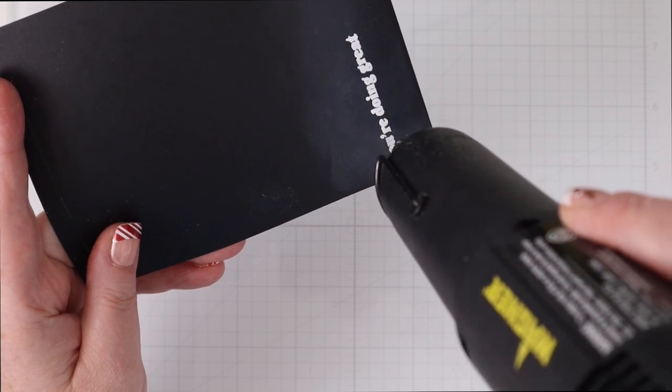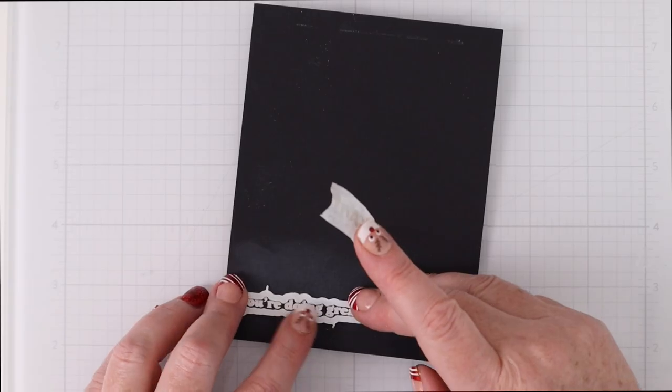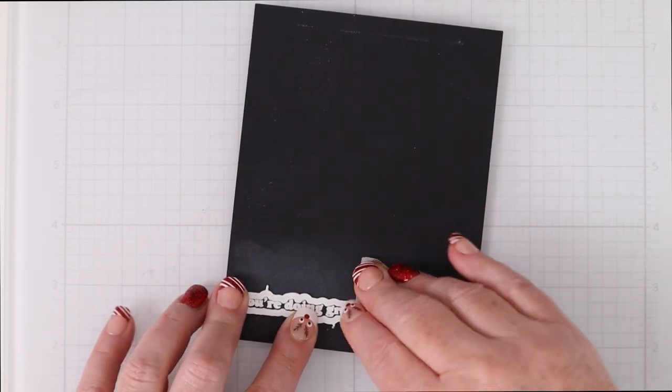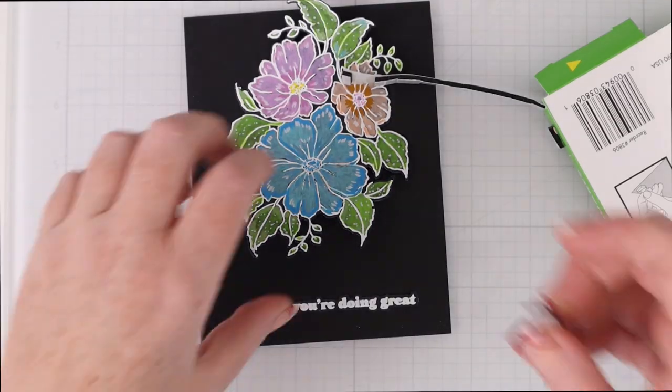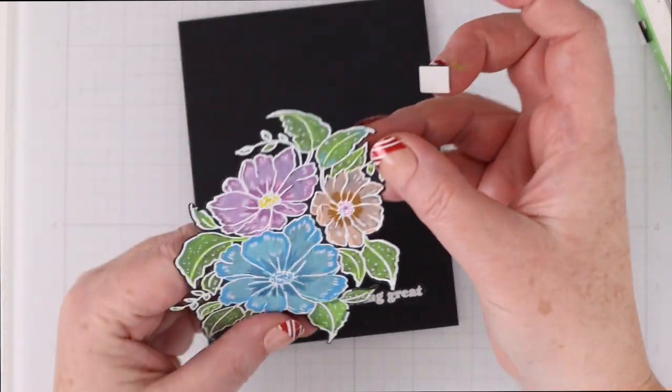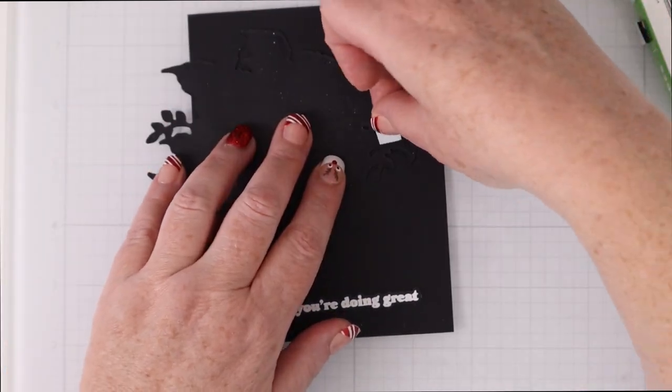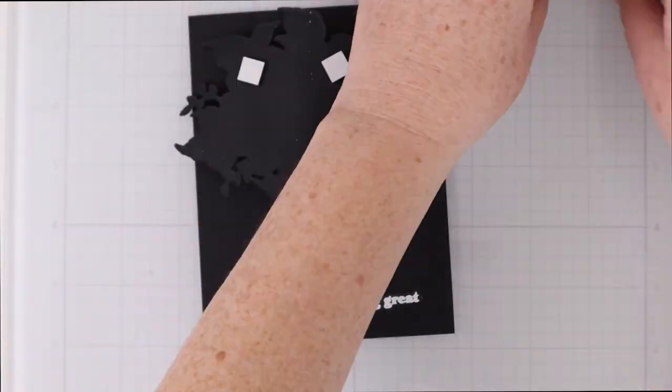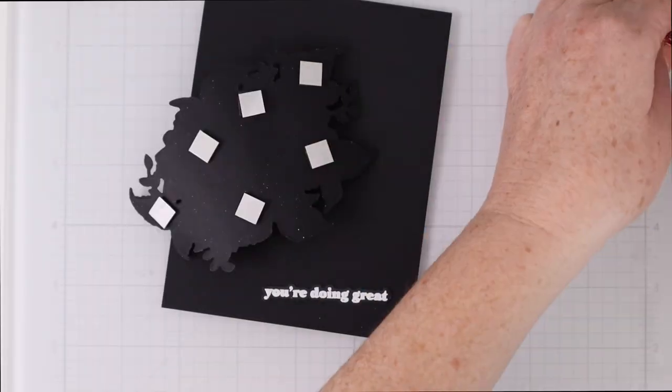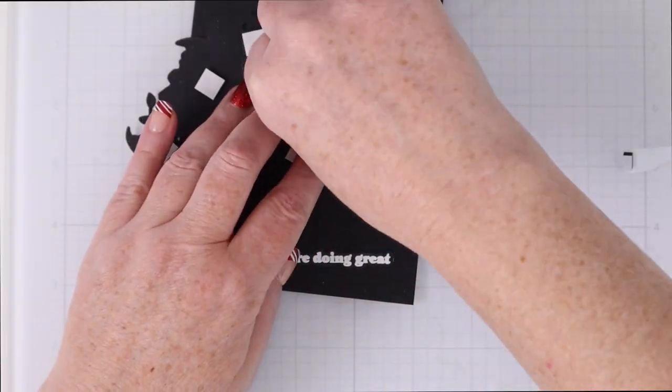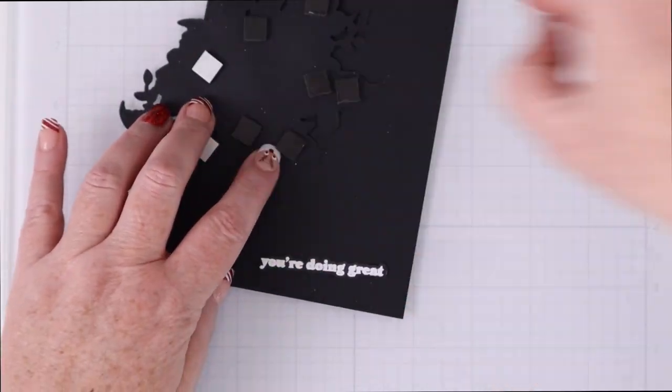What I really love about a lot of the stamp market's stamp sets and dies is that they have dies for the sentiments and I am going to pop up this cluster of flowers. I'm going to use black foam squares so that really the whole effect of the black doesn't get ruined with white peeking out from the back.